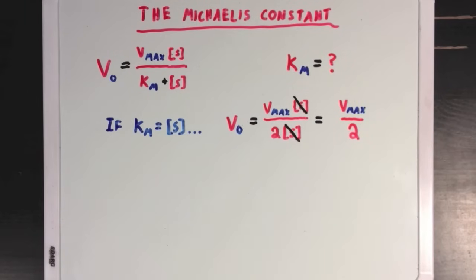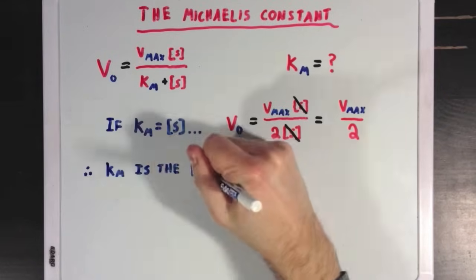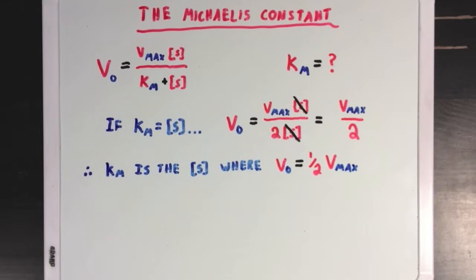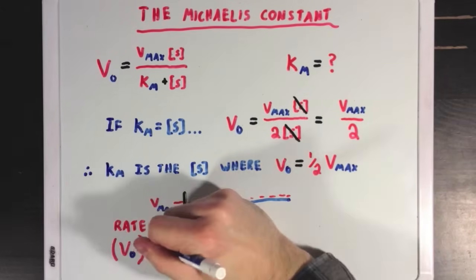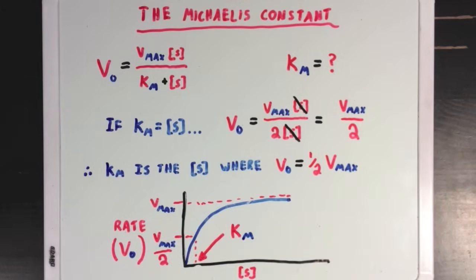And what this means is that KM, which we call the Michaelis constant, is defined as the concentration of substrate at which our reaction speed is half of the Vmax, so when VO is equal to one-half of Vmax. And if we look at that on a graph from before, you'd see that KM is a substrate concentration specific to our circumstances, where our rate is at half of its max.